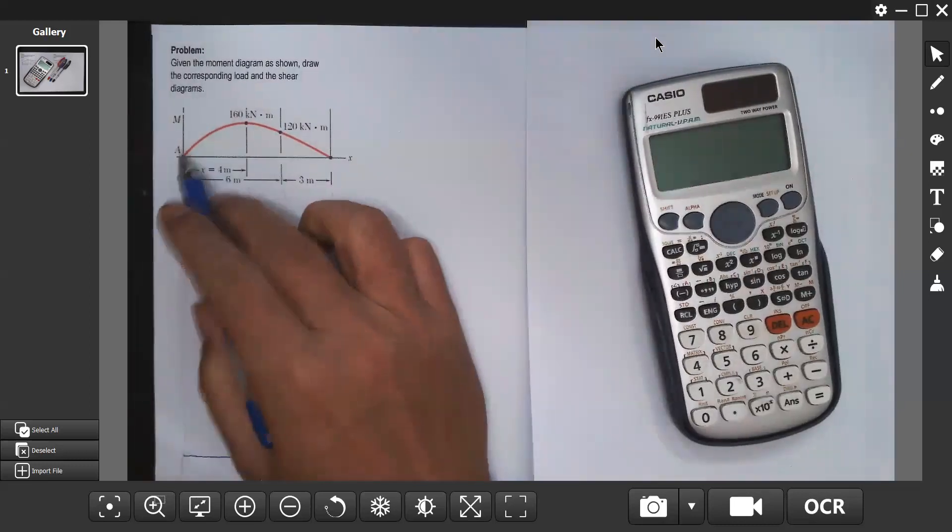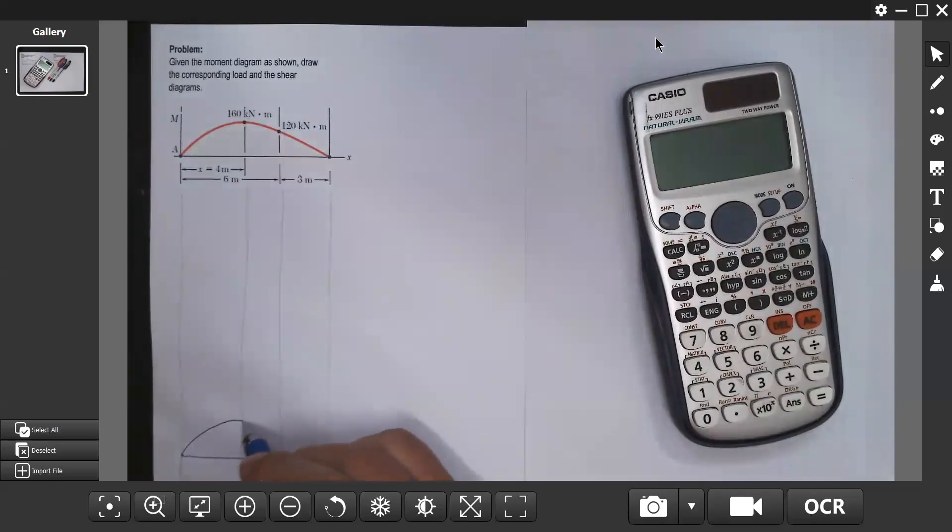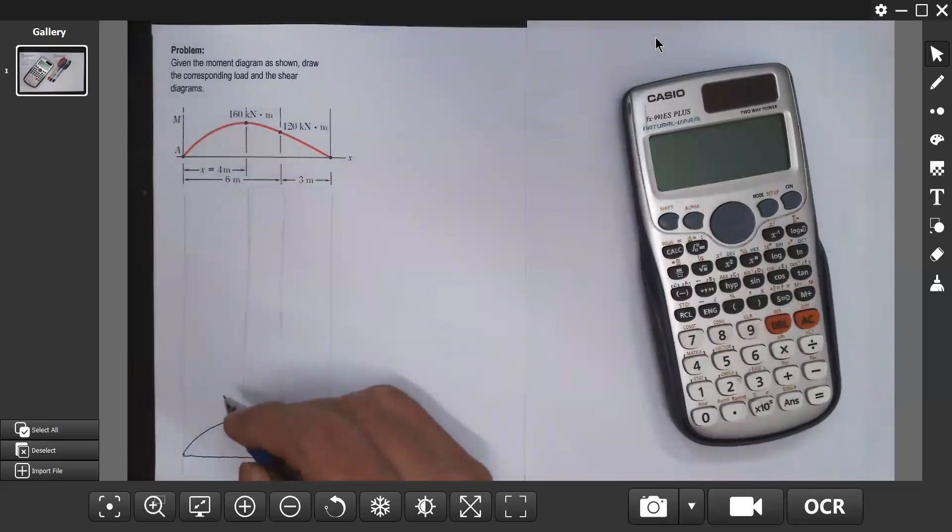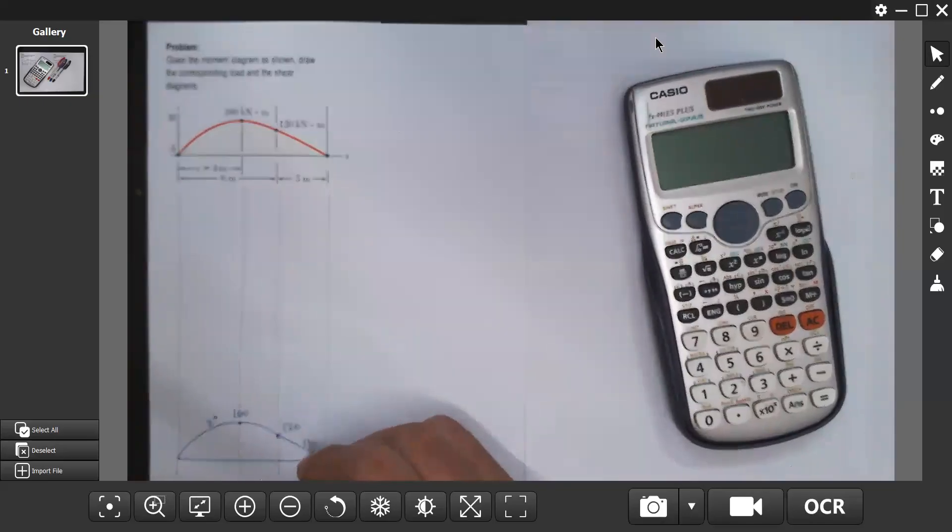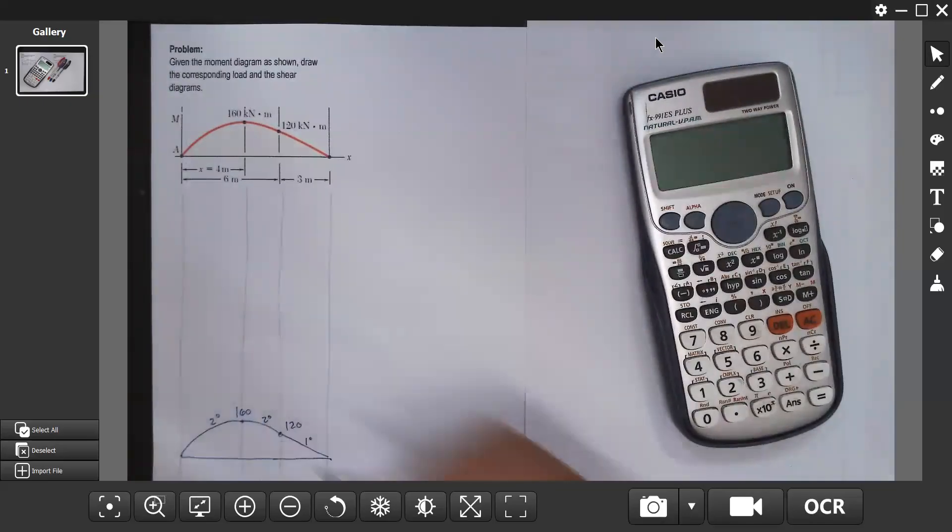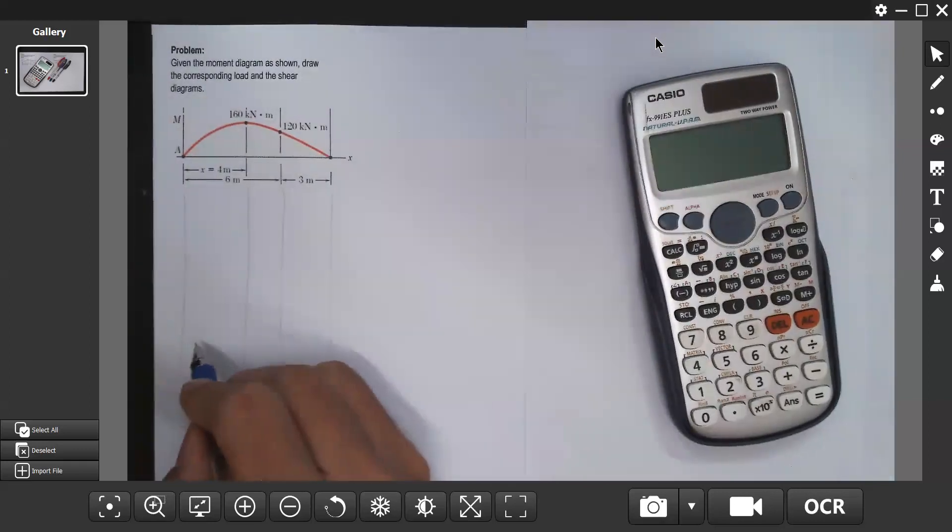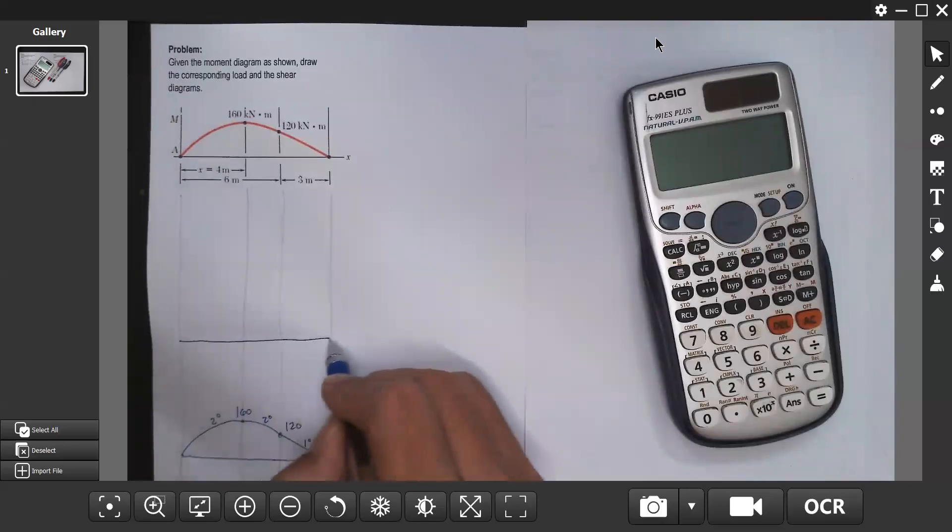It's a second degree curve. We have 160 concave downward and then this one 120, and then straight line. This is second degree and this is first degree. This is our moment diagram.